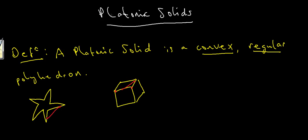In our last video we discussed platonic solids and stated the definition: a convex regular polyhedron. We had examples of polyhedra that were convex and one that wasn't. This one was a convex regular polyhedron, so it was a platonic solid, whereas this one clearly wasn't.